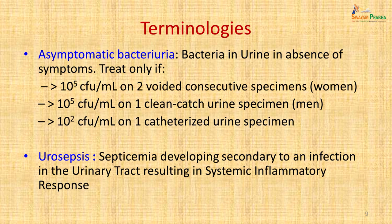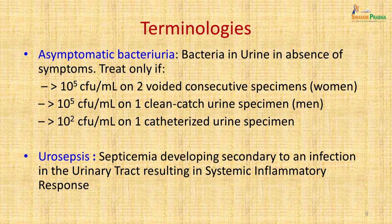Key terminology in UTI: Asymptomatic bacteriuria means bacteria are detected by culture but the patient gives no symptoms. It should be treated only if there are more than 10⁵ organisms per ml on two consecutive voided samples in women, or more than 10⁵ colony-forming units per ml in one clean-catch specimen in men, or more than 10² colony-forming units per ml in a catheterized specimen.